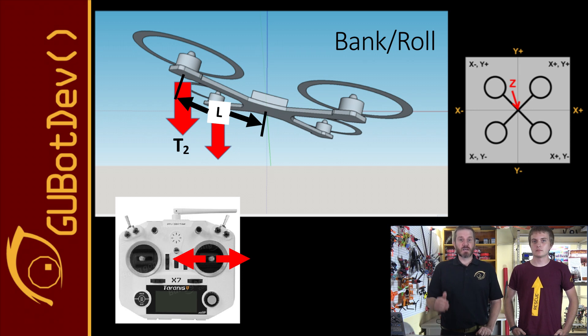The right stick on a Mode 2 transmitter, when turned from left to right, increases the throttle to two motors. Either two motors on one side, we'll call them the x negative motors, or two motors on the other side, we'll call them the x positive motors, and this will cause the drone to bank and move laterally.